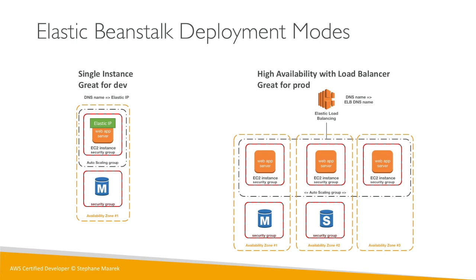There's a second setup: high availability with a load balancer, which is great for production deployments. In this case we have an Auto Scaling Group spanning multiple Availability Zones, with one or several EC2 instances in each AZ, their own security groups, and they may talk to an RDS set up in Multi-AZ with one master and one standby. The Elastic Load Balancer talks directly to the ASG and exposes a DNS name, which is wrapped by the Elastic Beanstalk DNS name.